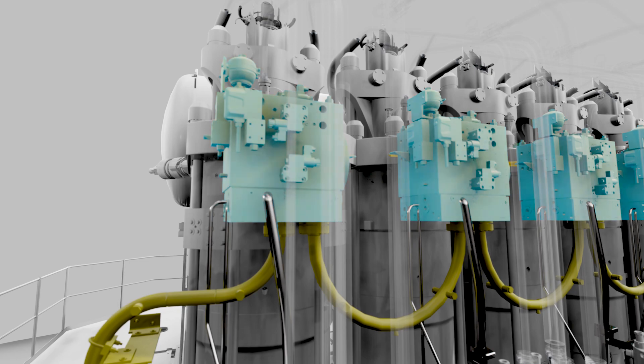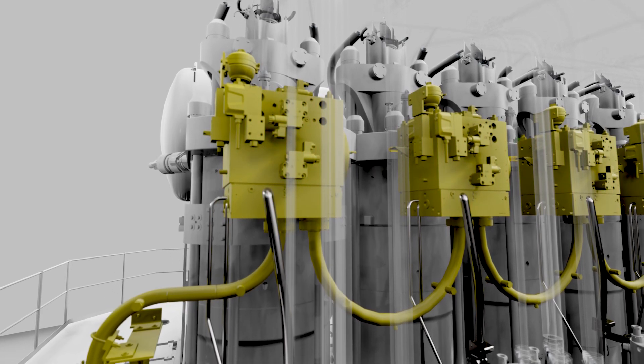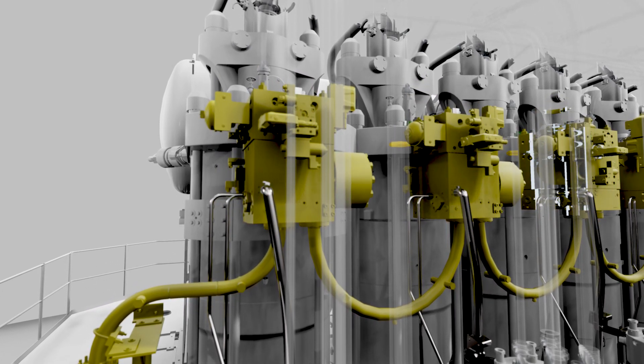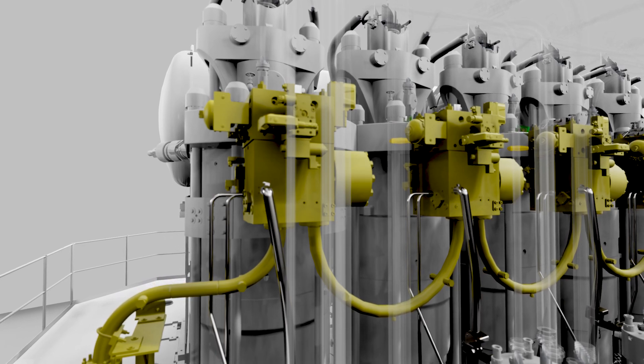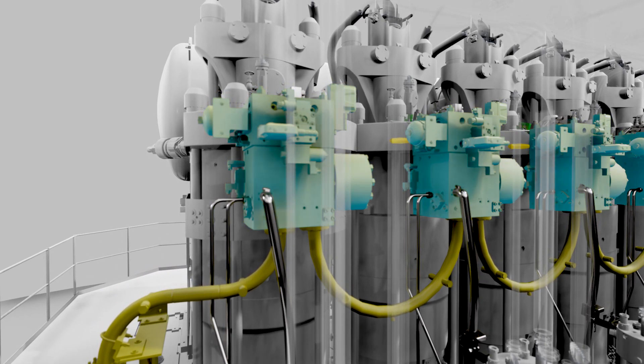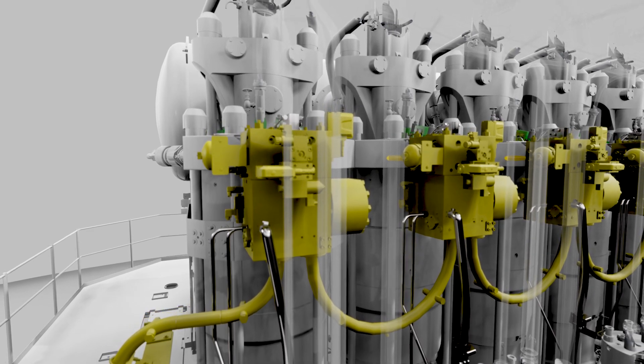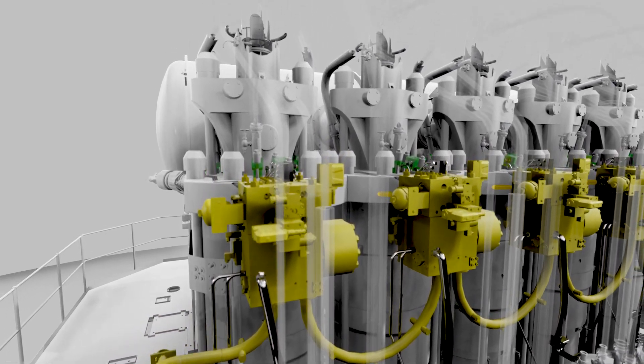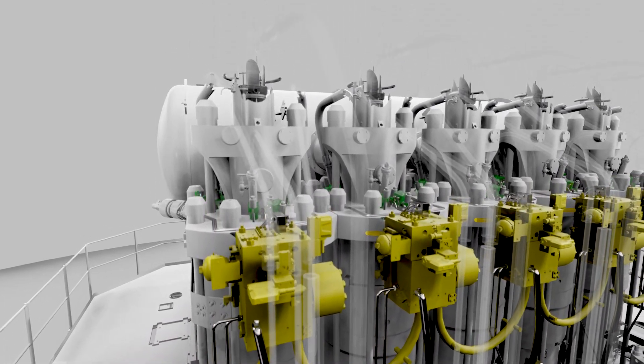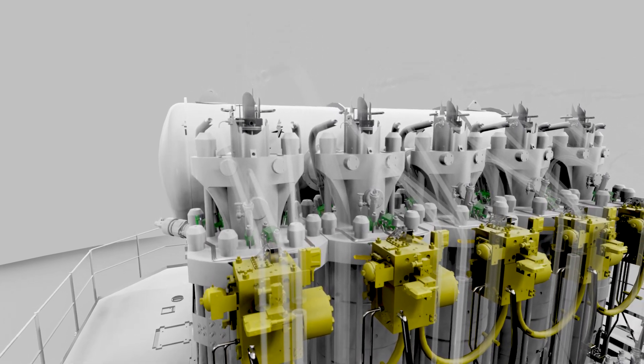New Gas Block. As a brand new feature for two-stroke dual fuel engines, the new MAN B&W MEGI Mark II gas block design with improved window valve enables cutout of single cylinders operating on gas while allowing continued operation on fuel oil.